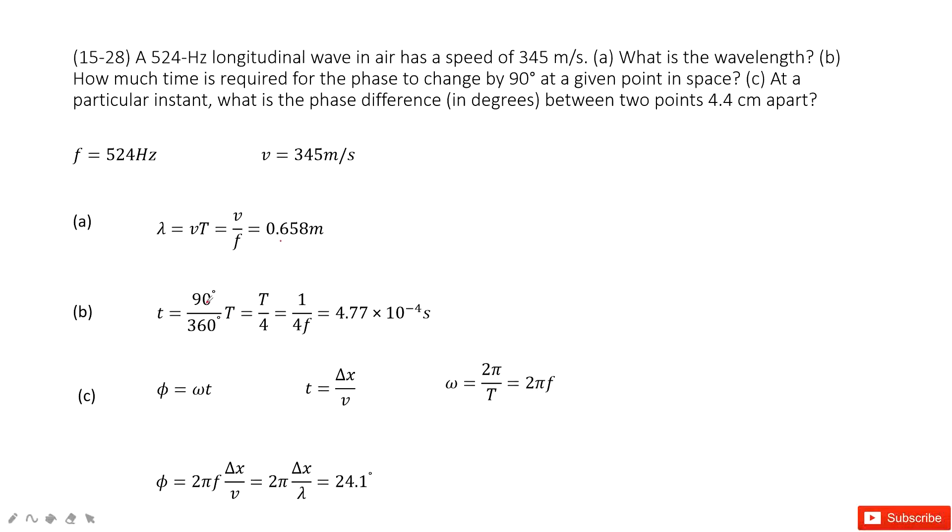Then 90 degrees over 2π is the ratio of the period. So 90 degrees over 360 degrees, which equals 2π, is one quarter of the period needed. So the time needed to change by 90 degrees is just one quarter of the period. Frequency is given, and 1 over frequency is the period. So we can input frequency to find time t.